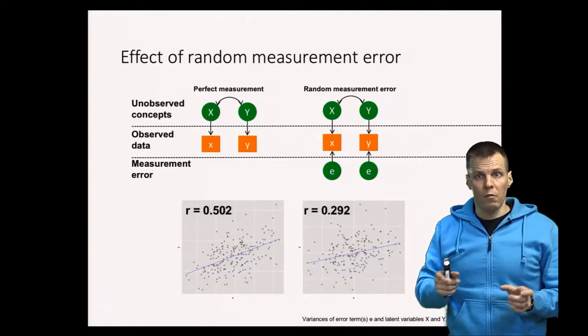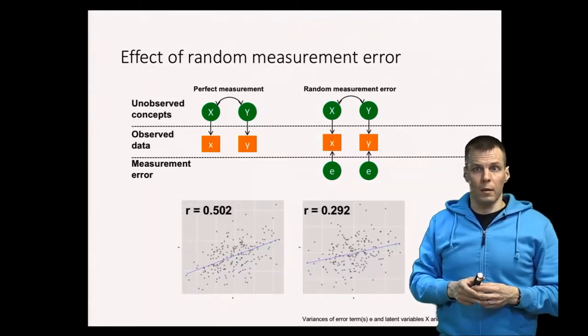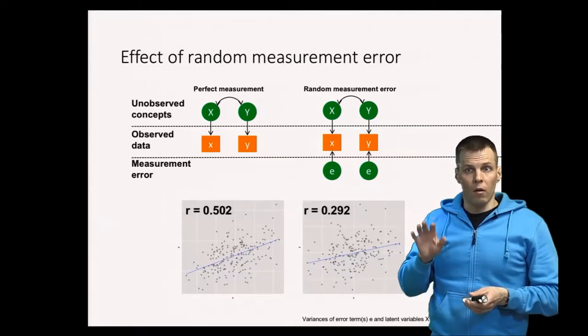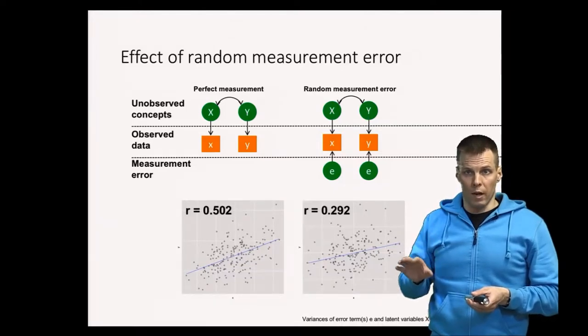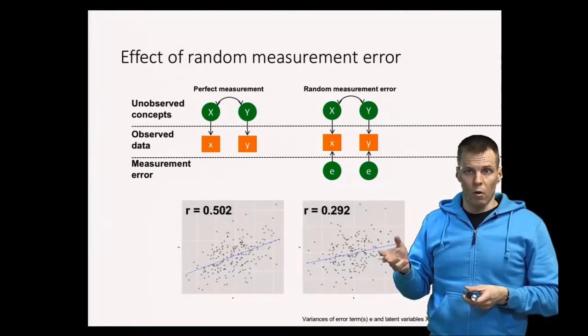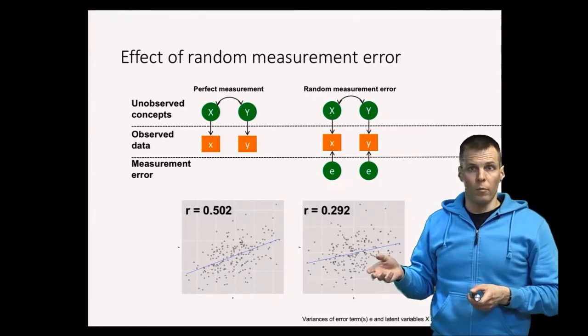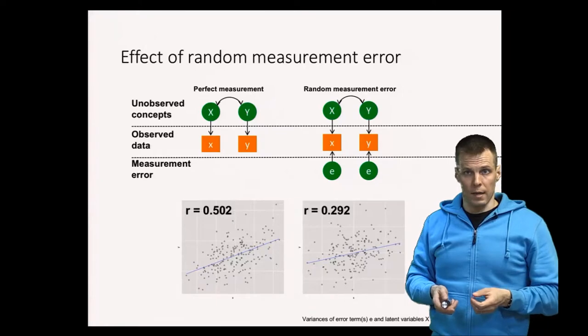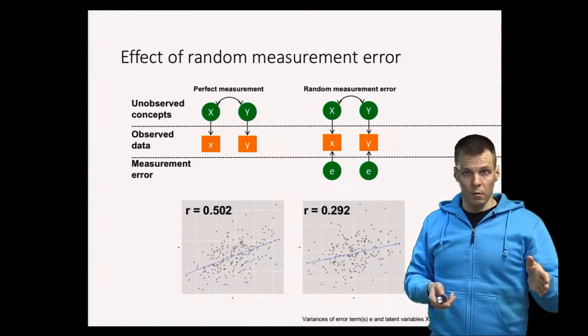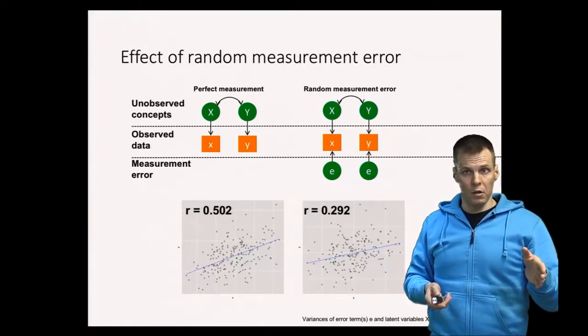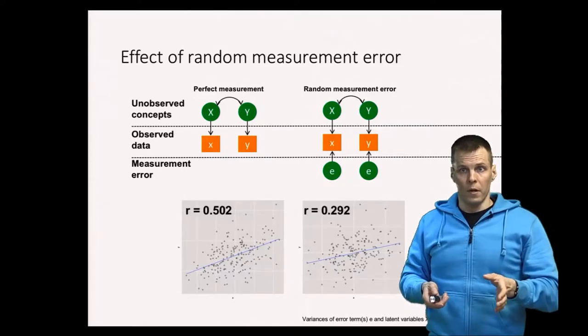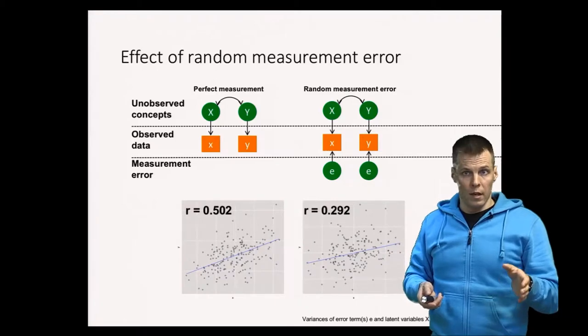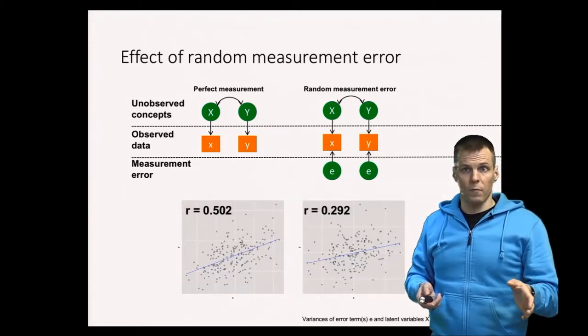The impact on regression analysis when you have multiple independent variables is more complicated, but generally when all variables are unreliable, then on average all regression coefficients will be biased downwards. If you have two variables, for example you have the interesting variable that is perfectly measured and you have a control variable that is a bit unreliable, then the unreliability of the control variable can cause the coefficient for the interesting variable to be overestimated.